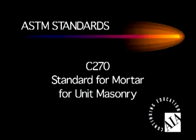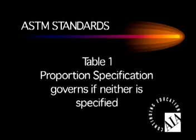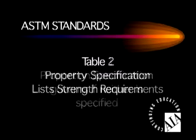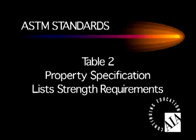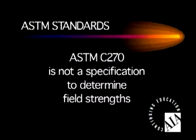We should briefly take a look at the ASTM standards. ASTM C-270, the standard specification for mortar for unit masonry, has two alternate specifications: proportion and property. The proportion specification, Table 1, governs if neither is specified. Strength requirements are only in Table 2, the property specification. Table 2 requirements are for laboratory-prepared mortars only. Section 3.1 states that ASTM C-270 is not a specification to determine mortar strengths through field testing.